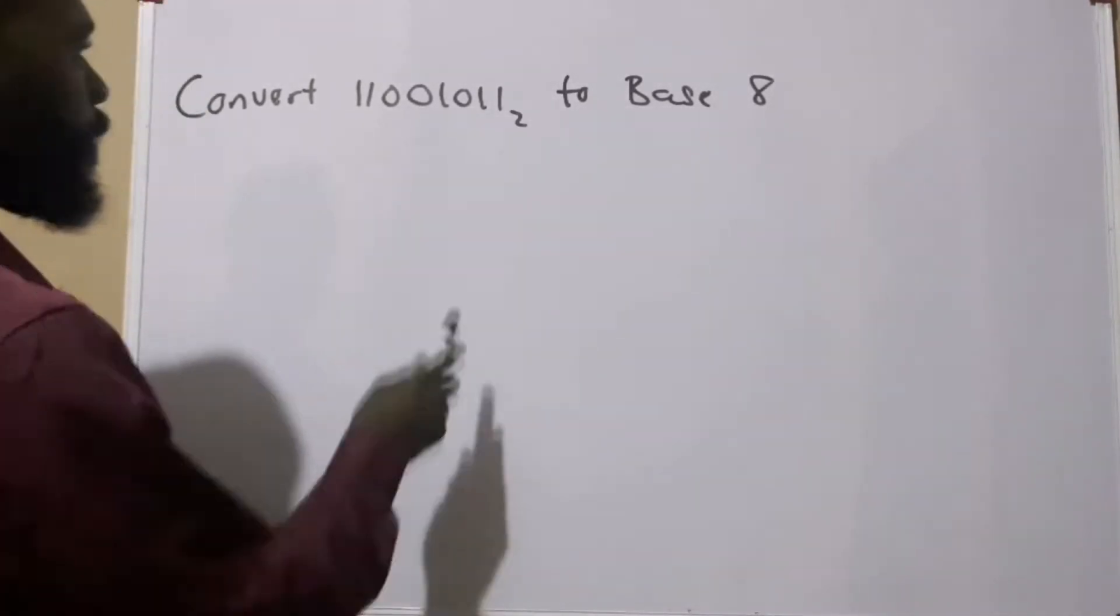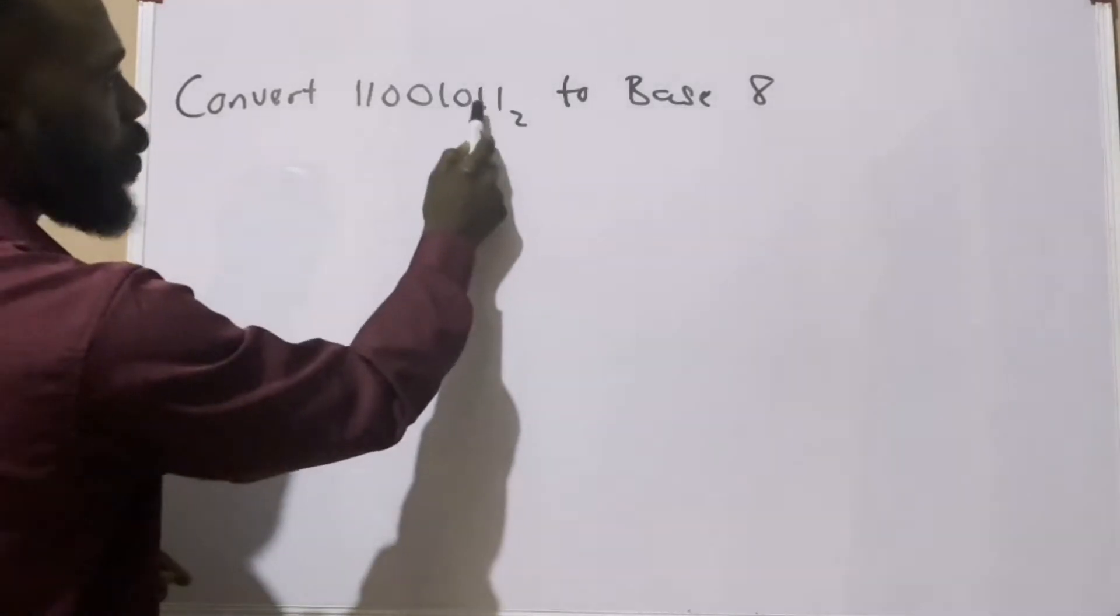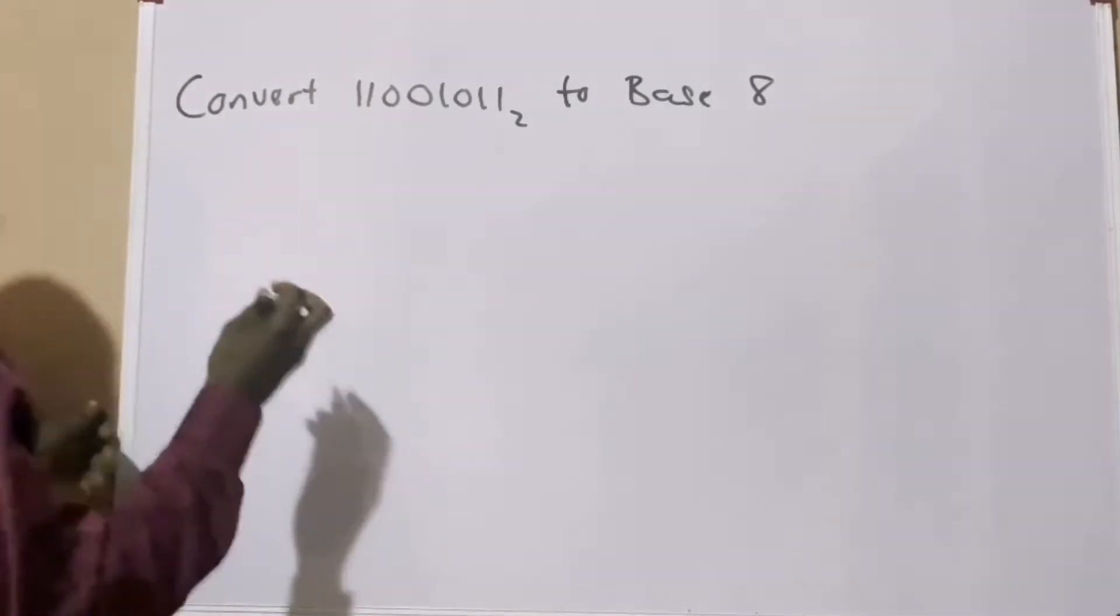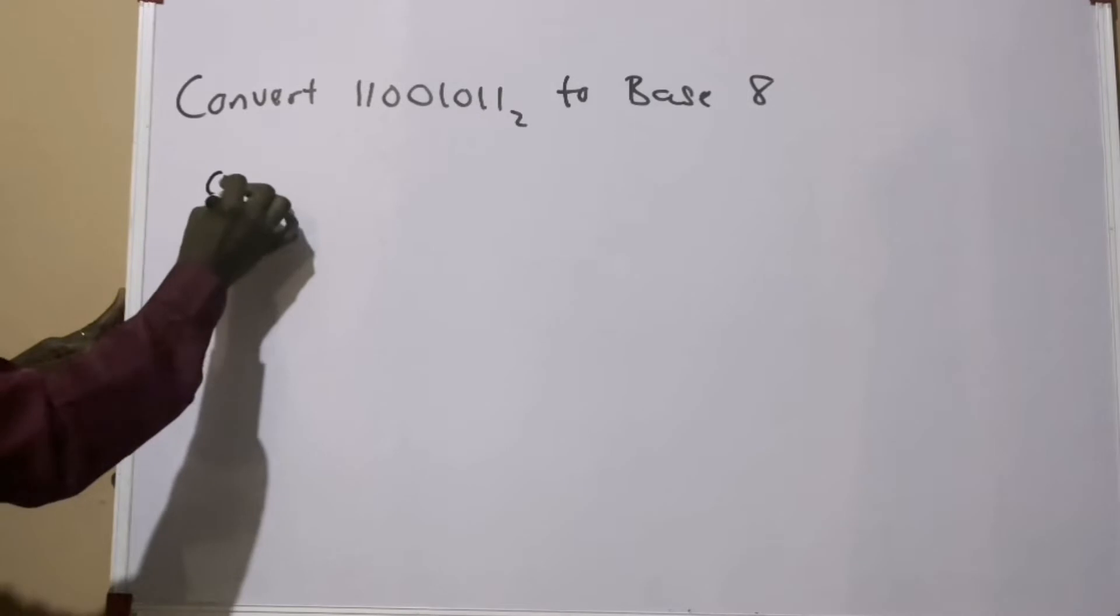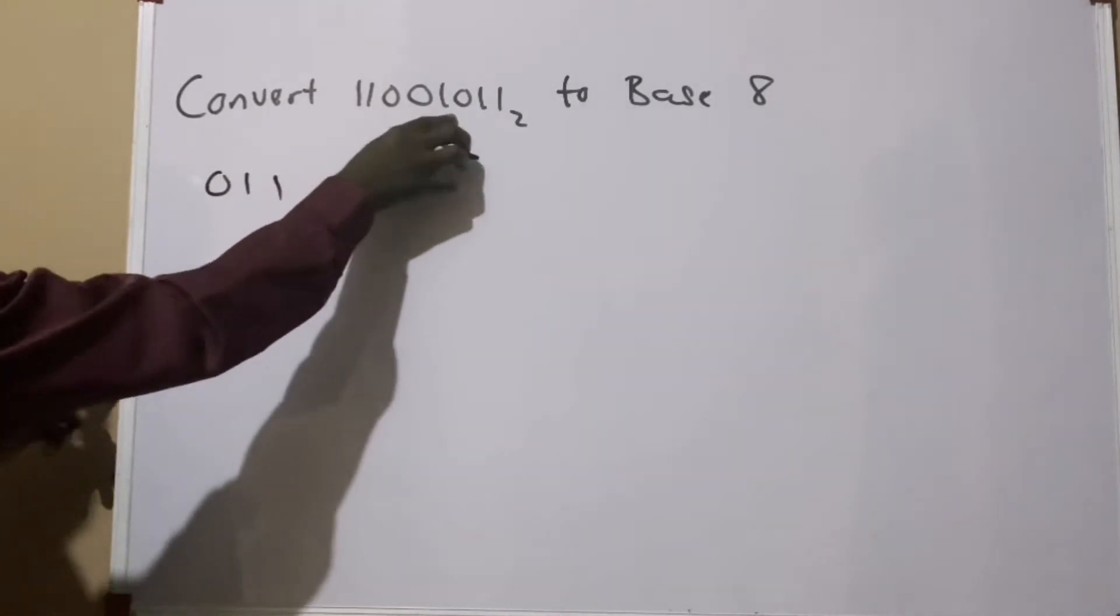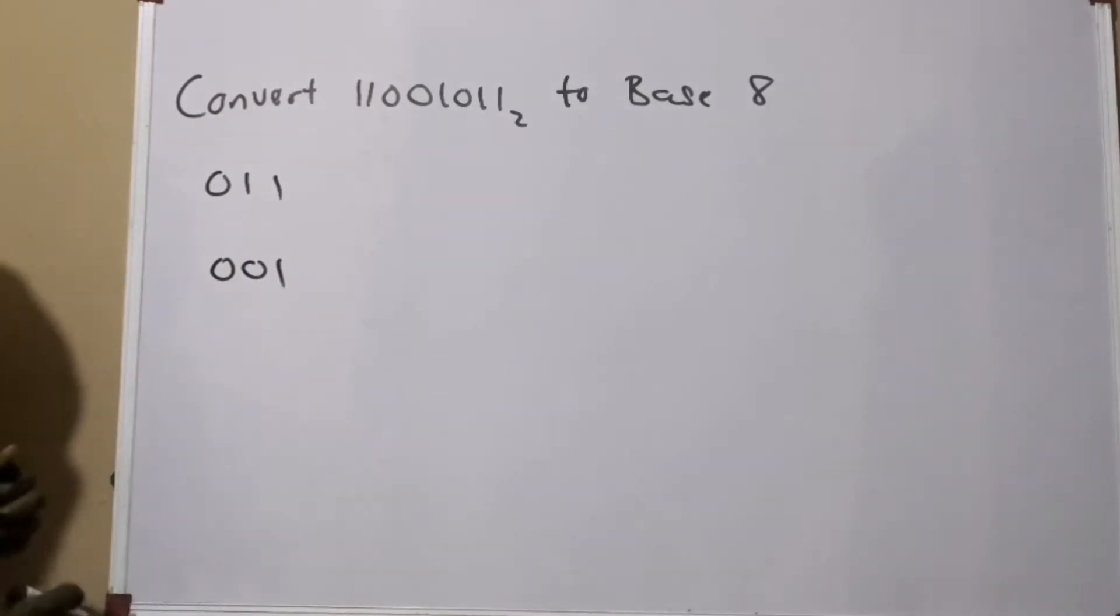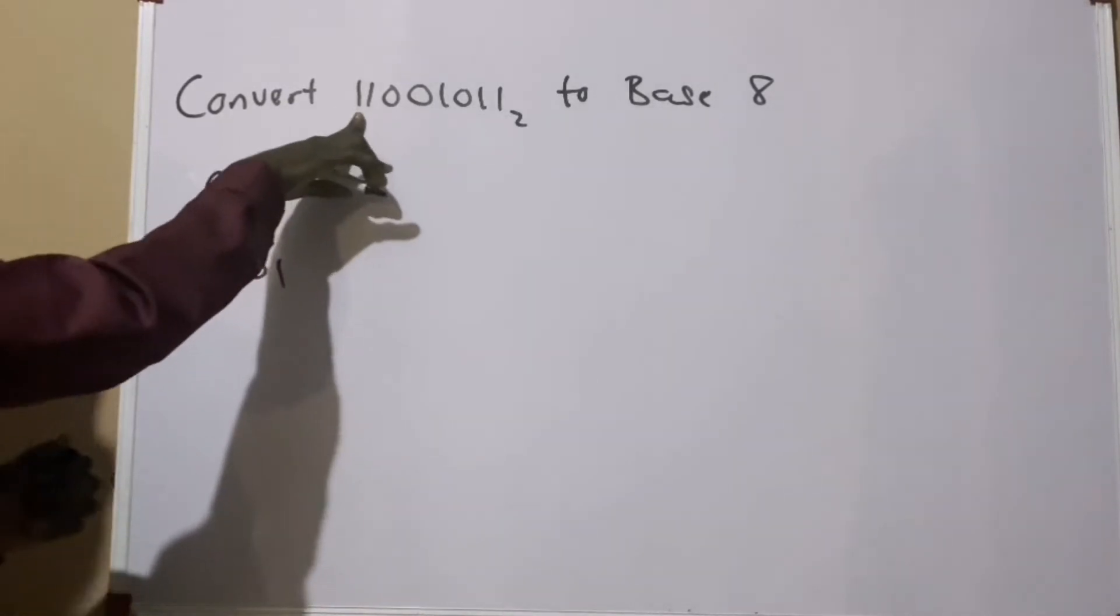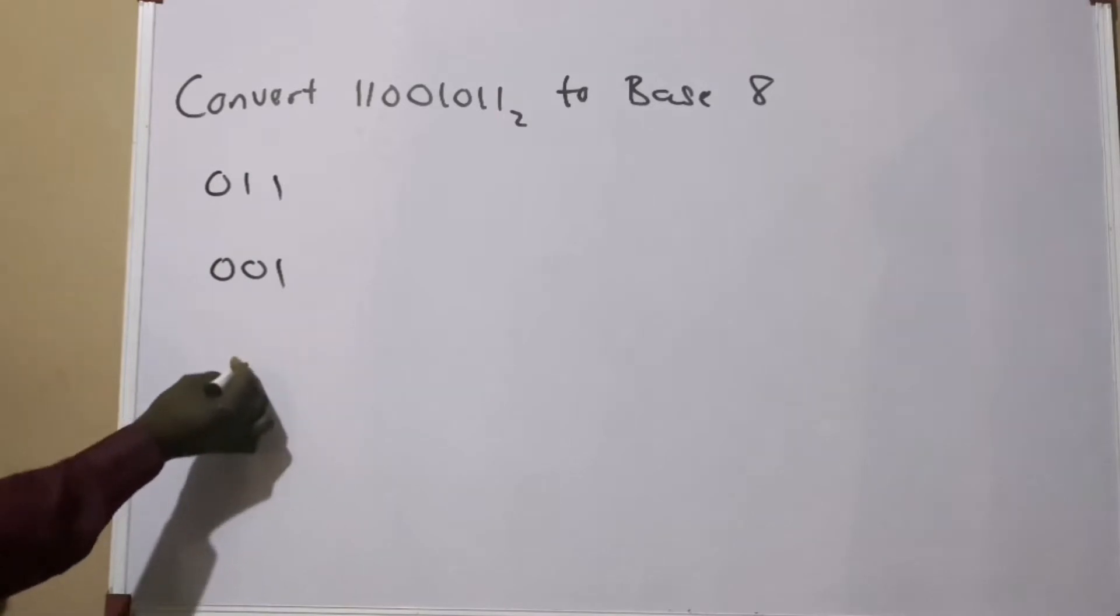If we should do this, the first thing I have here is 110, so we are going to have 0, 1, 1. The next thing I have is 0, 0, 1. And then what I have now is 1, 1.